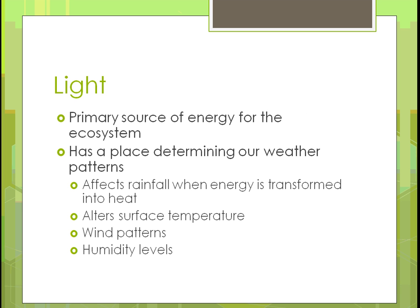Light is the primary source of energy for everything in the ecosystem. It determines our weather patterns, affects the rainfall we get, and transforms energy into heat. It alters the temperature of the surface, changes wind patterns, and affects the humidity levels of our weather.